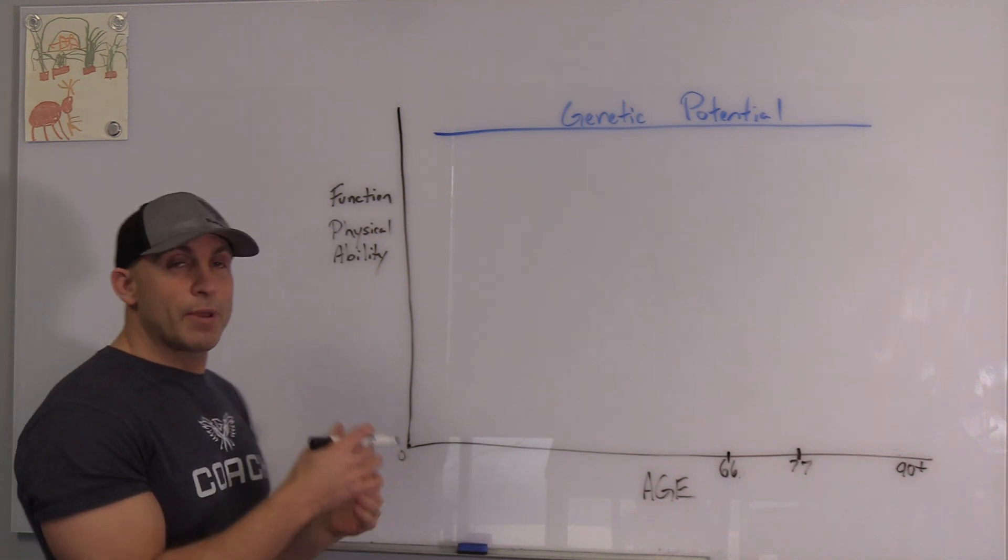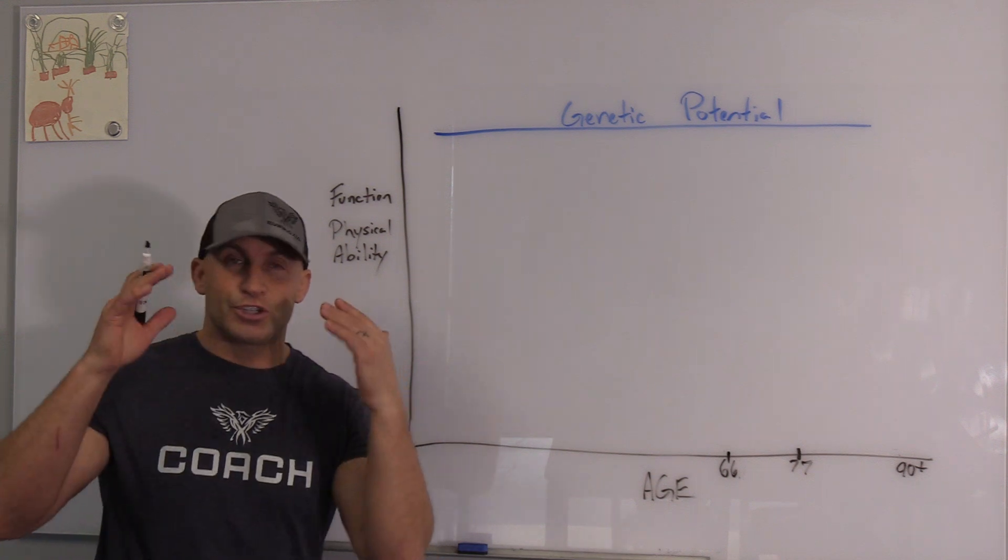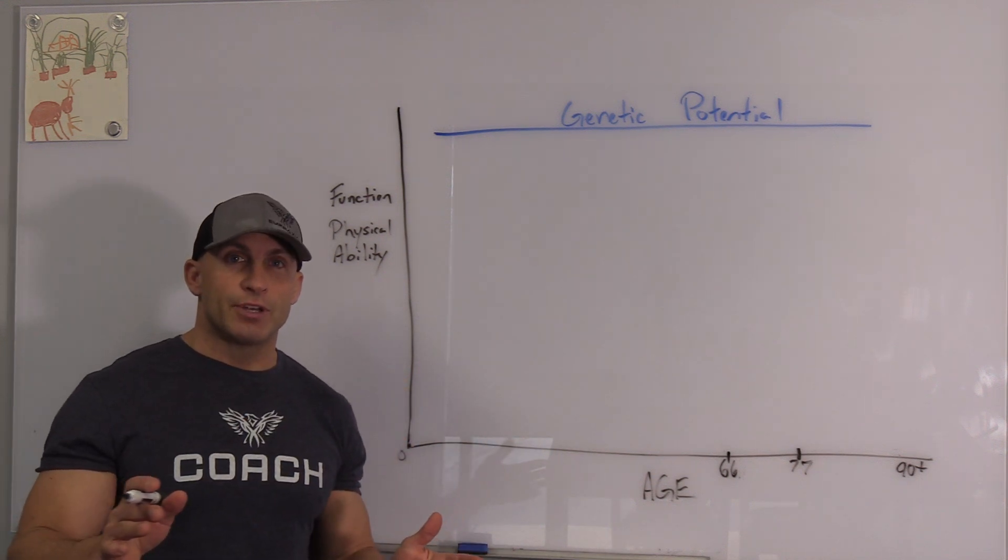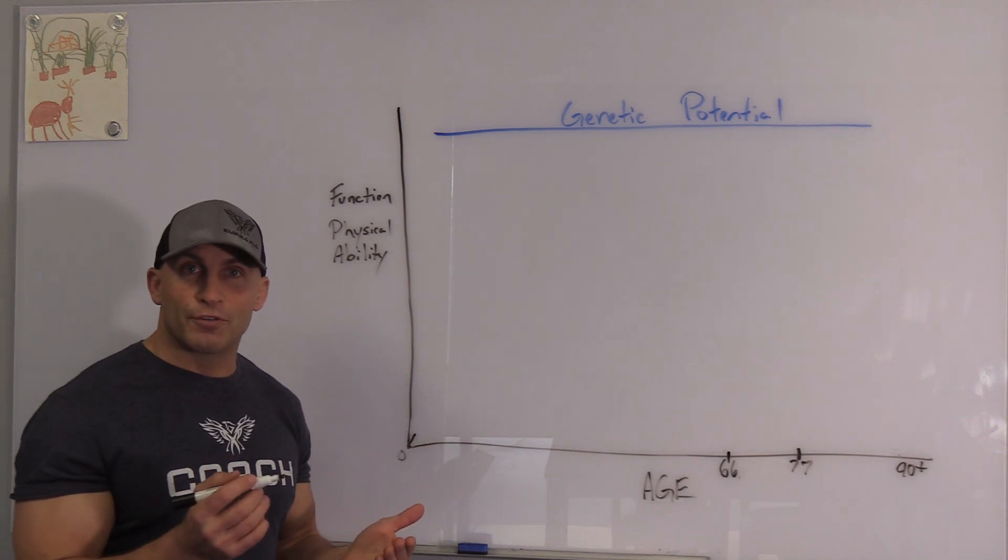On this axis we have physical function or physical ability, and on this axis we have age. And then up here we have genetic potential. So when we're born, when a baby's born, they have very little function.